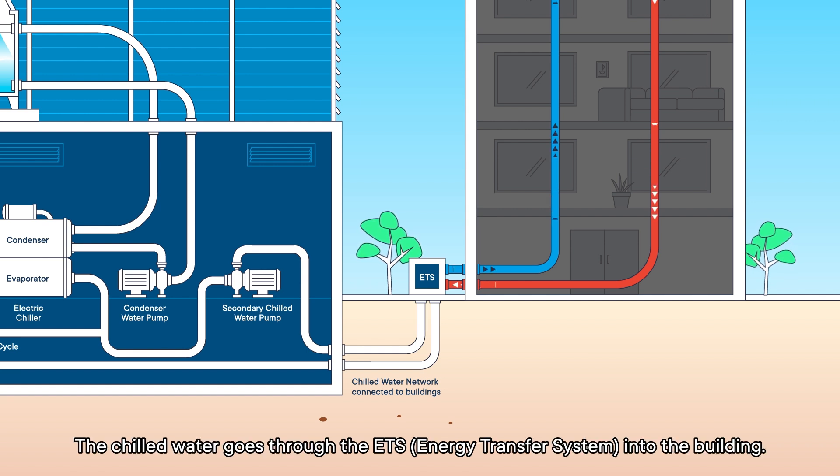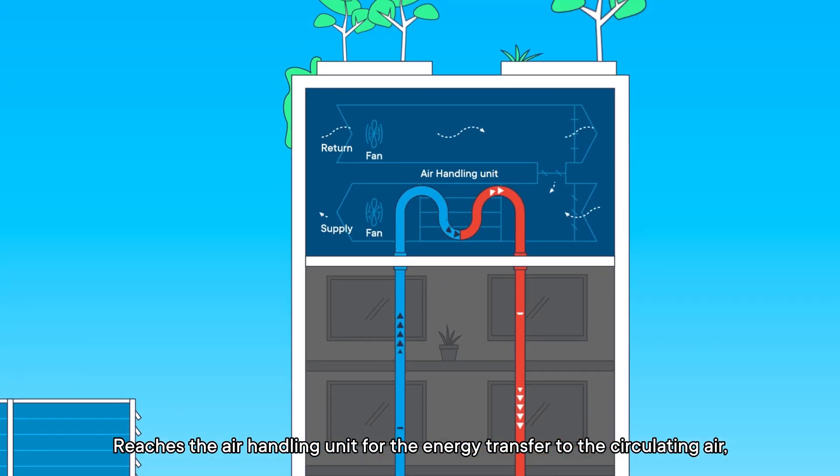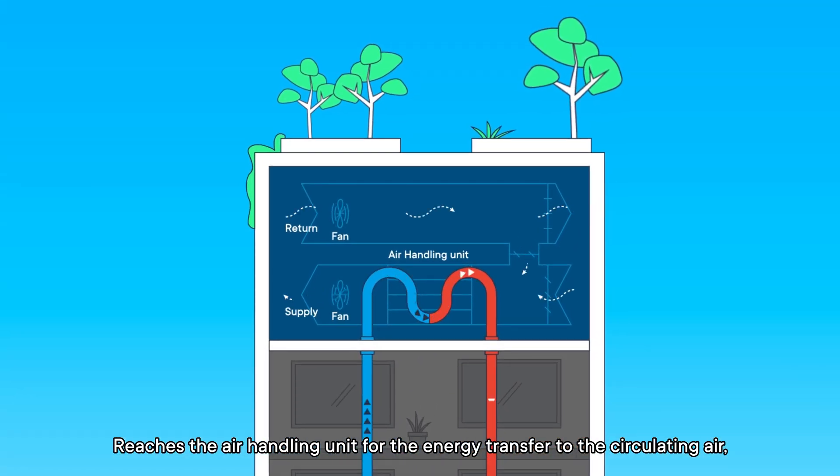Building circuit: The chilled water goes through the ETS into the building, reaches the air handling unit for the energy transfer to the circulating air, and then the warm water comes back down to the ETS.